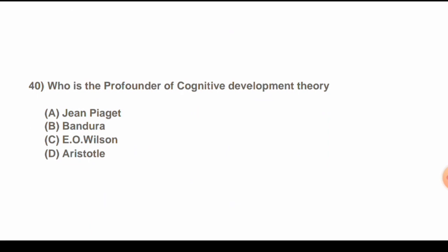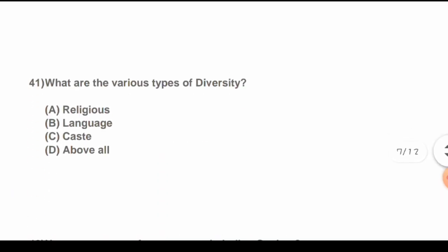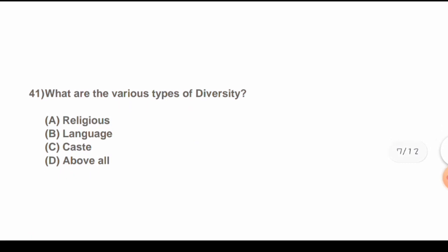Question 40: Who is the profounder of cognitive development theory? Options are: A) Jean Piaget, B) Bandura, C) E.O. Wilson, D) Aristotle. The correct answer is A) Jean Piaget.